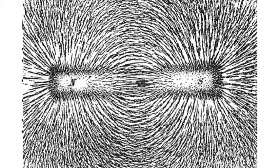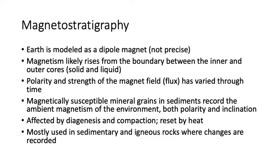Magnetically susceptible mineral grains in sediments record the ambient magnetism of the environment — both polarity and inclination. Like iron filings on a bar magnet, the grains line up and point toward the north pole. At the equator, inclination is parallel with the surface; in the northern hemisphere, magnetic grains dive into the earth, giving us paleomagnetic inclination to determine paleolatitude. Relevant minerals include magnetite, hematite, and sometimes goethite.